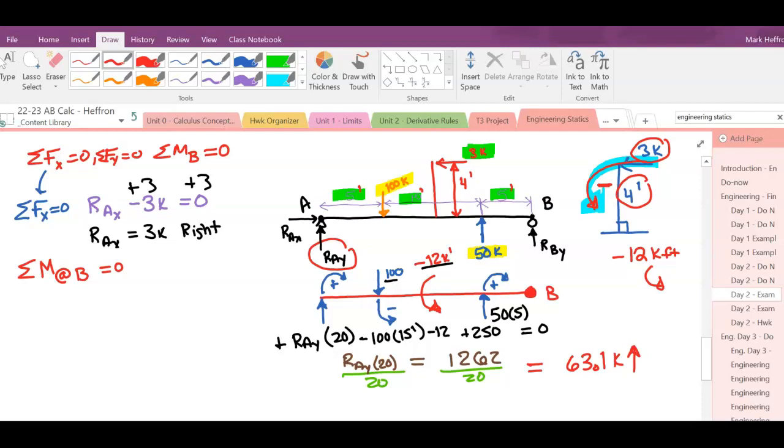So now we have everything except this RBy. So we'll use the last equation of statics we haven't used. Sum of the forces in the y equals 0. So we've got negative 100 because it's coming down. Positive 50 going up. Positive 63.1 going up. Plus RBy equals 0. When we solve this out, we get RBy equals 13.1 kips.